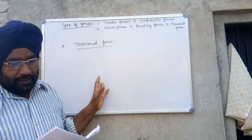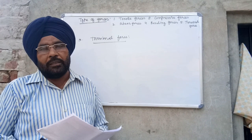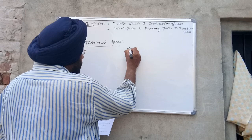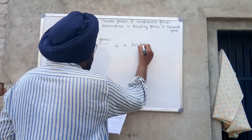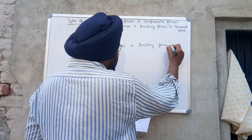Fifth is torsional force. Torsional force is a twisting force that is applied on an object by twisting one end while the other end is held in position or twisted in the opposite direction. It is also called twisting force or torsional force.